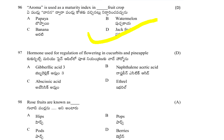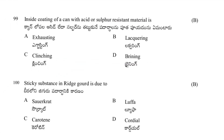Hormone used for regulation of flowering in cucurbits and pineapple is asked. Rose fruits are also known as: hips, pops, pots, or berry. The answer is A — hips.